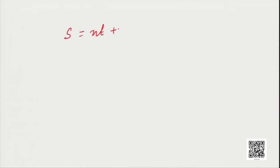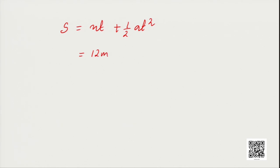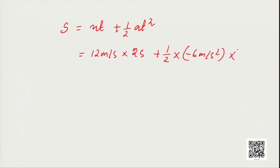Using S equals UT plus half AT squared: S equals 12 times 2 plus half times (minus 6) times (2 squared), which gives S equals 24 minus 12 equals 12 meters. The car traveled a distance of 12 meters before coming to rest. Using the two equations of motion, we solved this numerical.